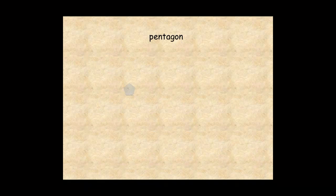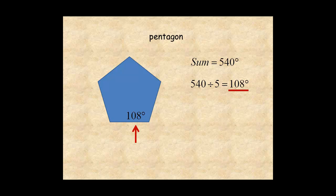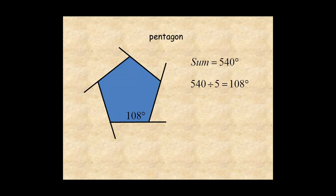This pentagon has five sides, so the sum of the measures of its interior angles is 540 degrees, and each of its interior angles is 108 degrees. If you extend the sides of the pentagon you have five exterior angles, one at each vertex. Since each exterior angle is supplemental to an interior angle, its measure is 72 degrees.